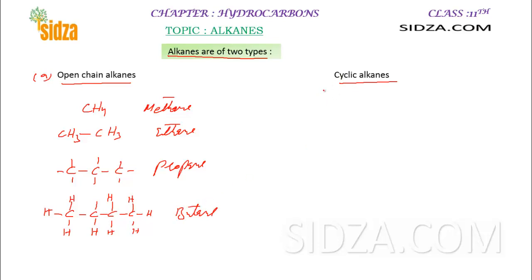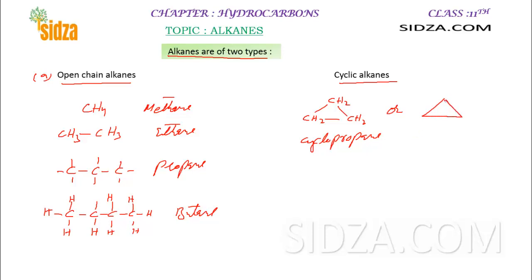In the cyclic ones, there is also a carbon-carbon single bond, but the molecule is cyclic. For example: CH2 single bond CH2 single bond CH2 with a single bond closing the ring — this is a three-carbon molecule called cyclopropane. Normally we show it like a triangle in bond-line representation, where each corner represents one carbon atom.